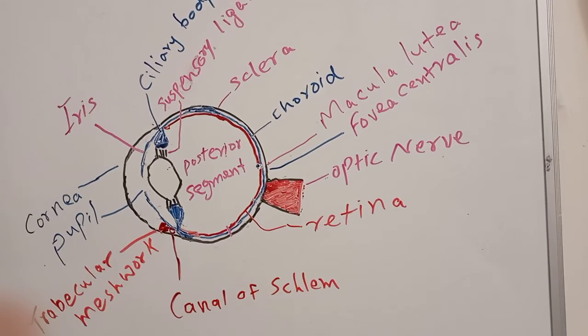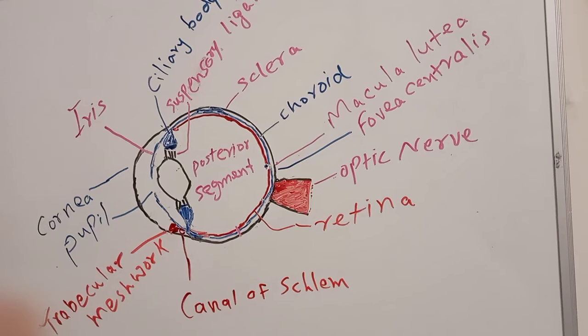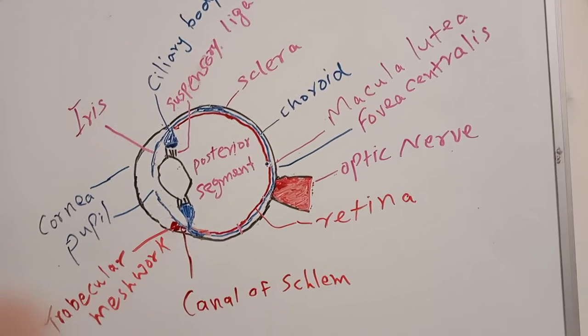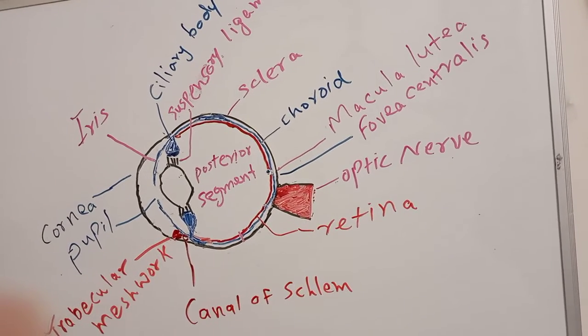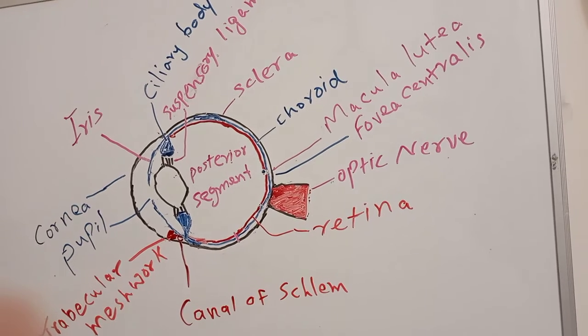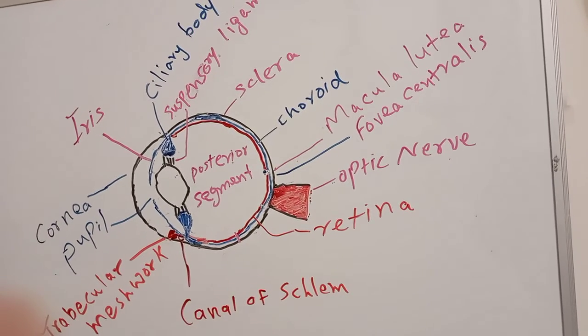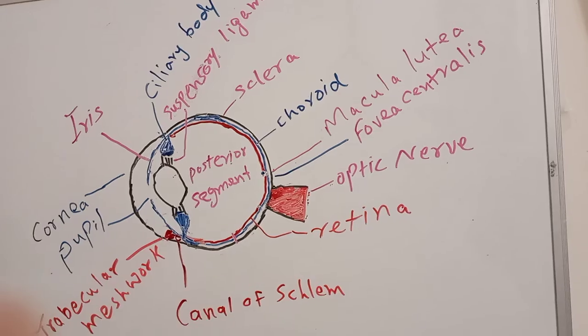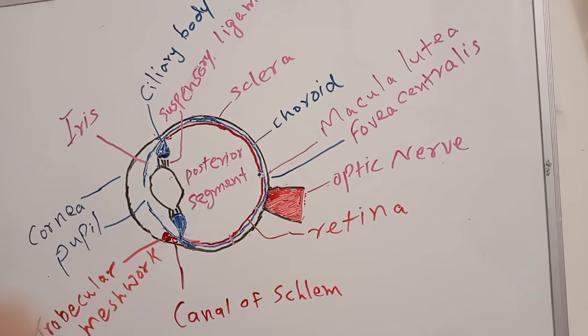The eye has got rods and cones. These are cells for vision. Rods are for black and white vision and cones are for colored vision.